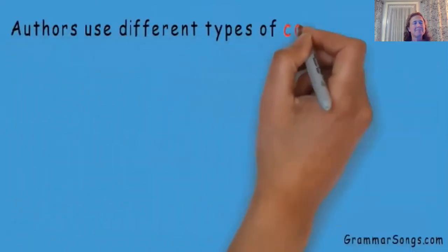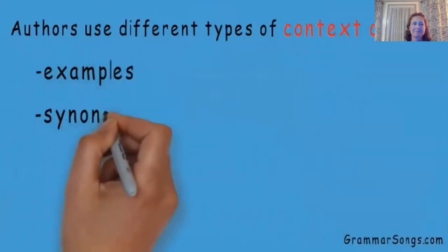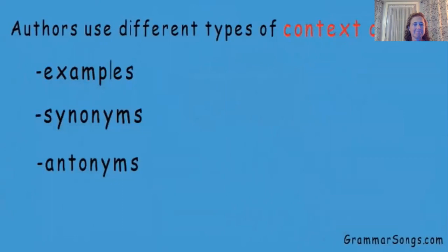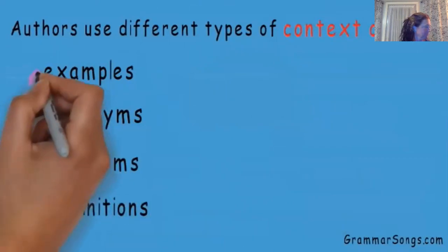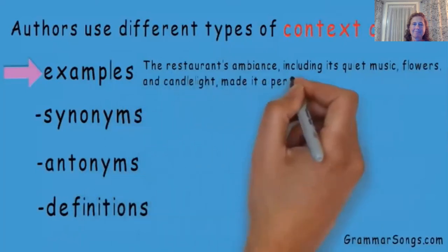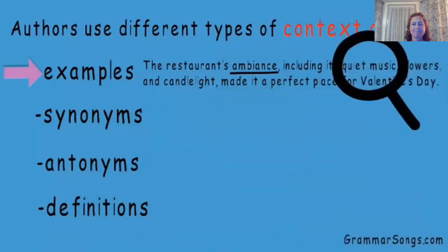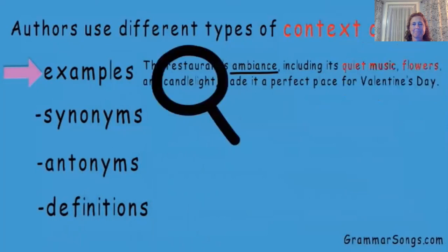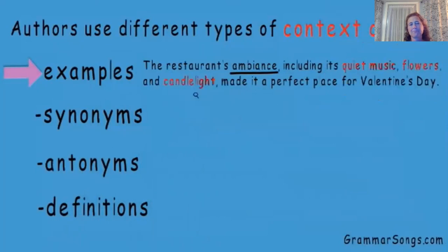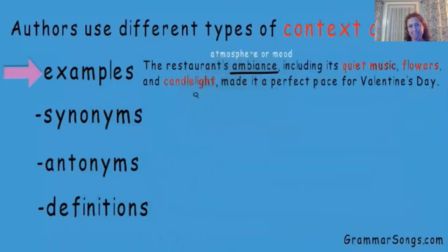Authors use different types of context clues. They might use examples, synonyms, antonyms, or even definitions. For instance: the restaurant's ambiance, including its quiet music, flowers, and candlelight, made it a perfect place for Valentine's Day. If you don't know what ambiance is, the examples — quiet music, flowers, and candlelight — let you know that ambiance is the special atmosphere or mood of a particular environment.